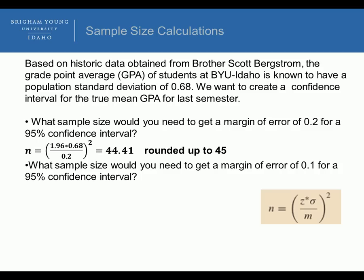Stop the video and figure this question out. What sample size would you need to get the margin of error of 0.01 for a 95% confidence interval? Well, the answer is, now the only thing that changes is the desired margin of error, which is 0.01. Everything else stays the same because you're still doing a 95% confidence interval, and you still have the same standard deviation. When you calculate that, you get 177.64, round it up to 178.